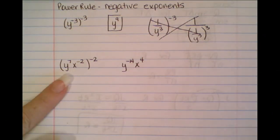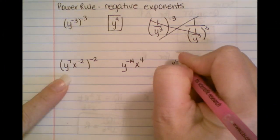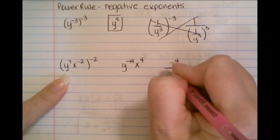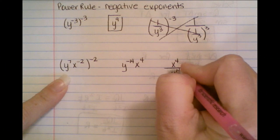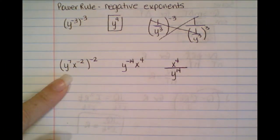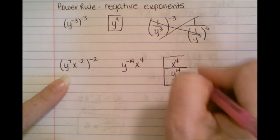Now, the same rule holds. All of your exponents have to be positive in your final answer. So in order to make that negative 14 positive, we need to move it or place it on the bottom, so that we get x to the 4th divided by y to the 14th.